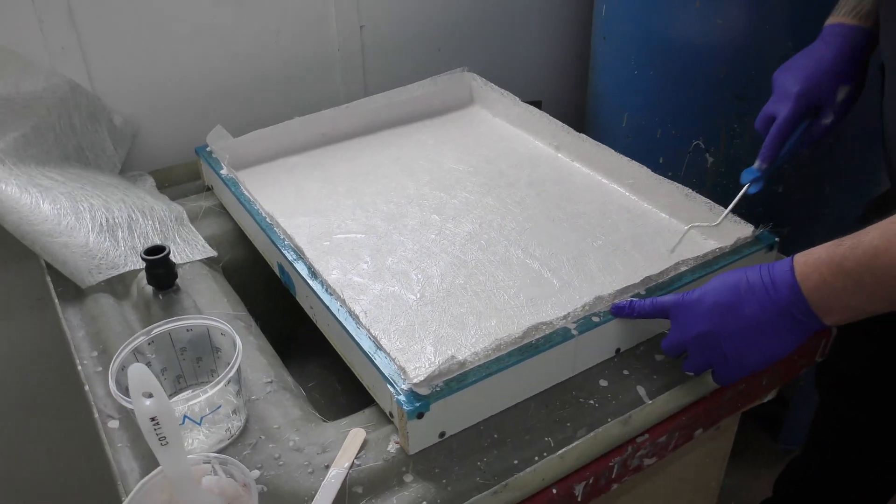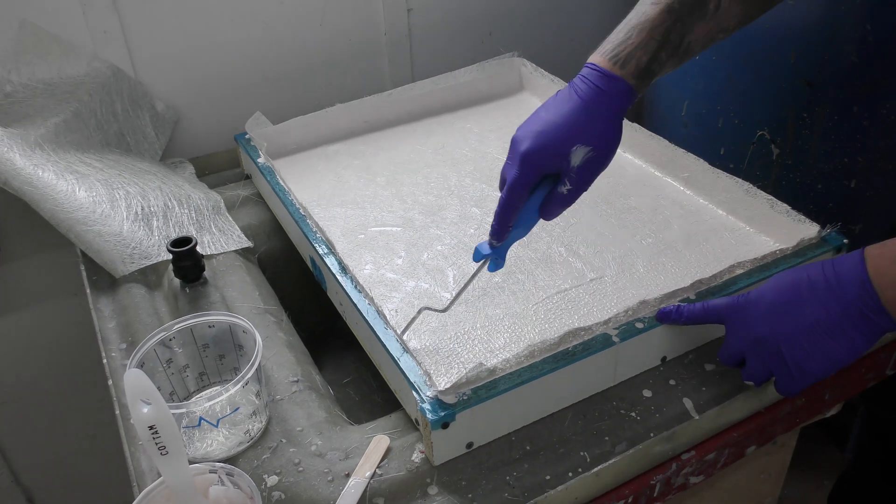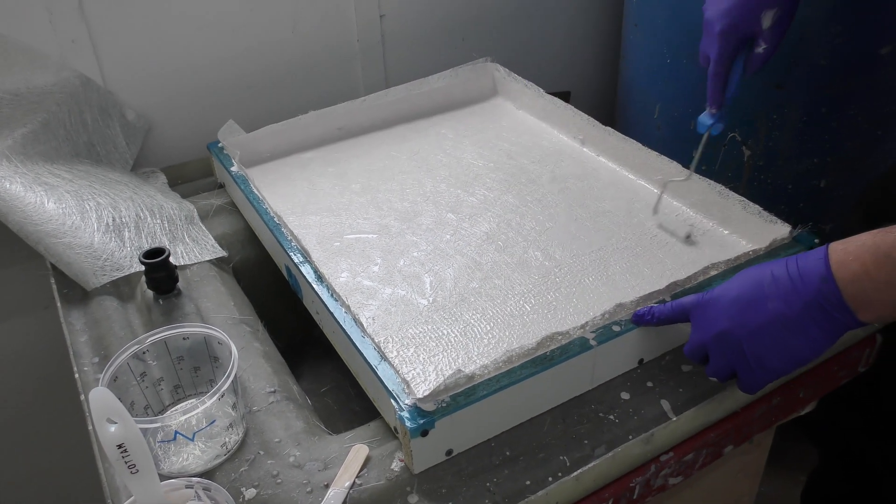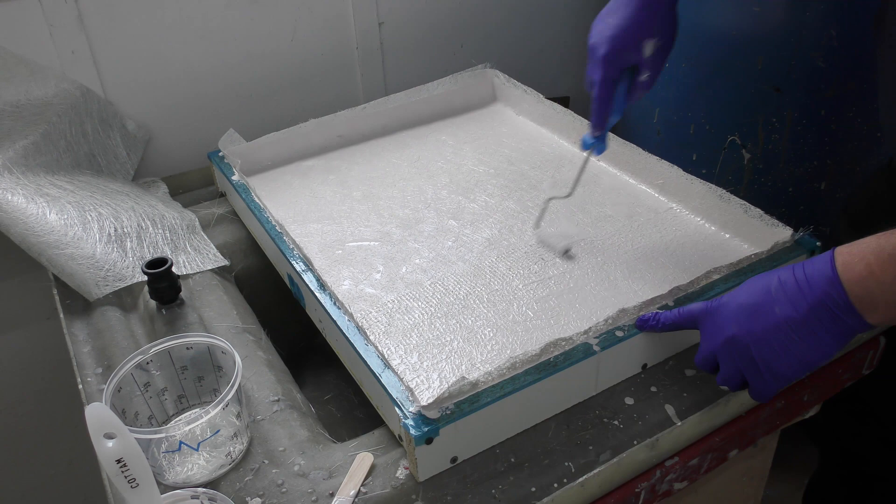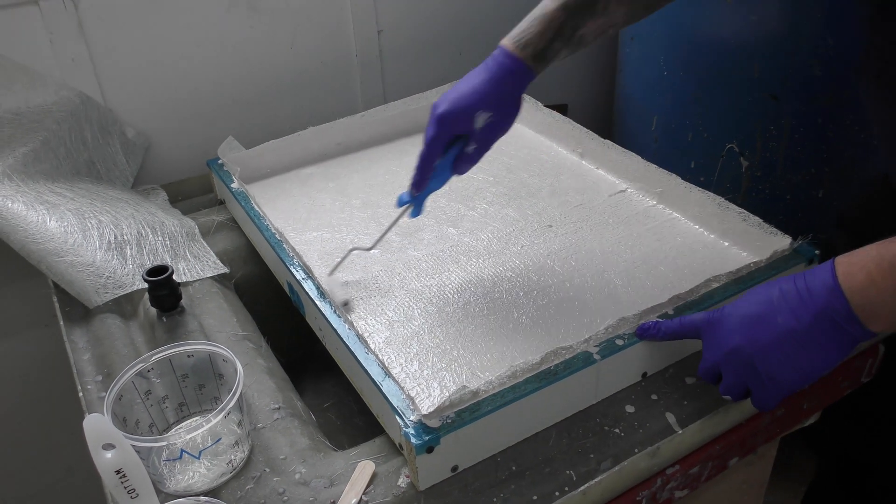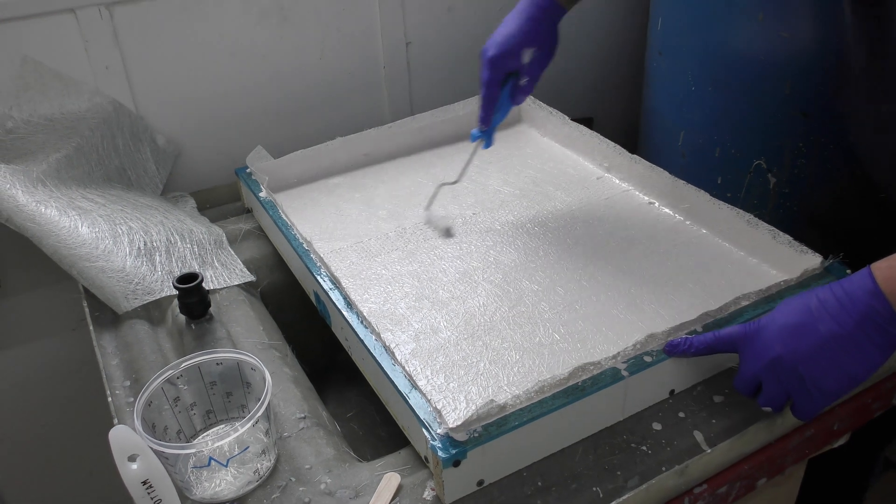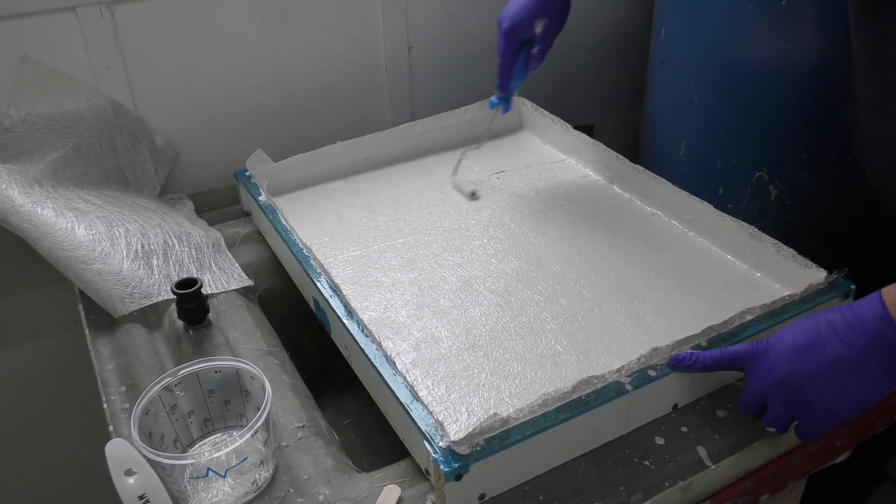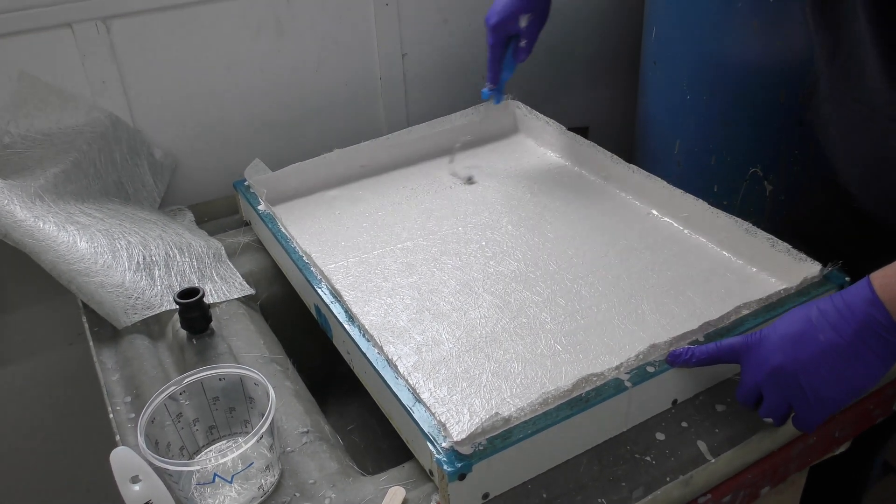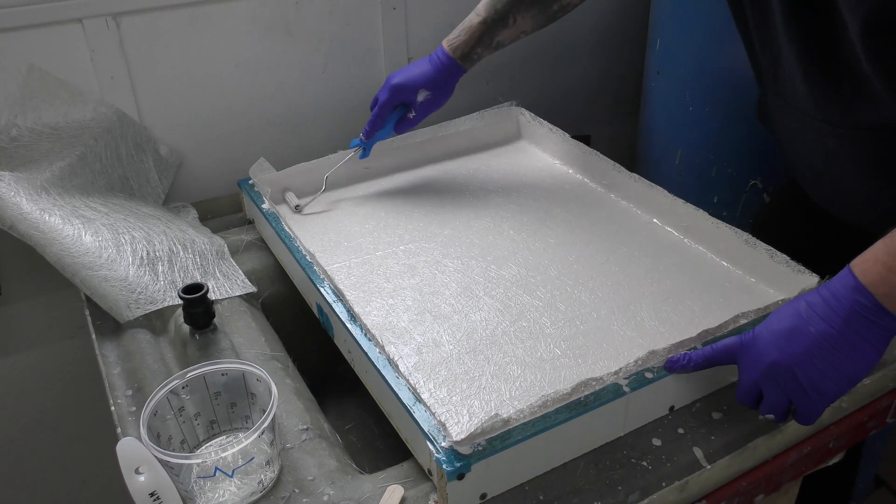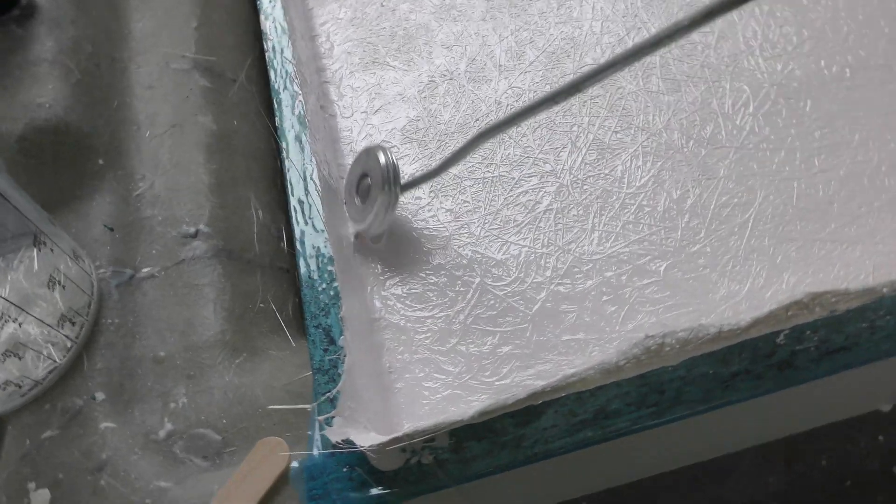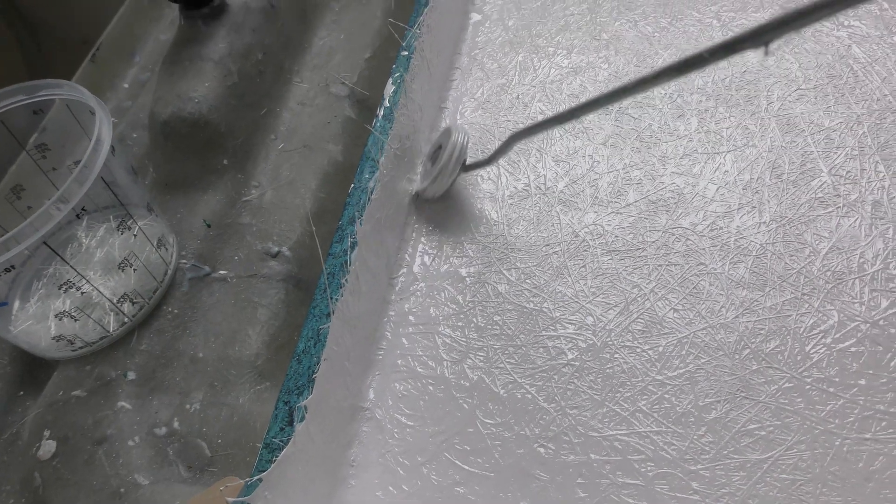Once we've applied the resin, then use a paddle roller to flatten out the matting and work out any air bubbles. This consolidates the mat and the resin together. Use a radius or corner roller to expel any air from the corners.